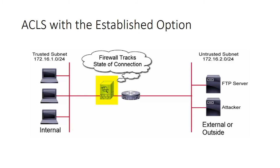Using the established configuration on a perimeter router can easily solve some of the issues with reconnaissance, such as someone trying to use ping or traceroute to discover the topology of your network. Any ping or traceroute traffic would be denied by the perimeter router, thereby preventing a potential leak of information about the network infrastructure.